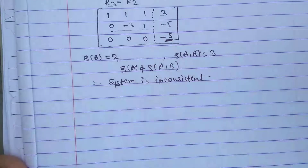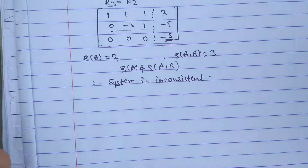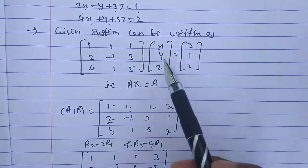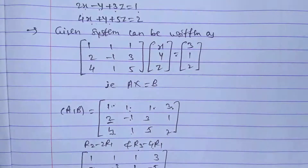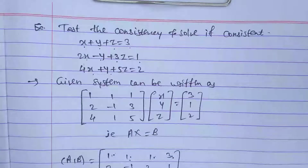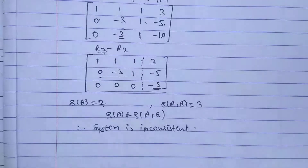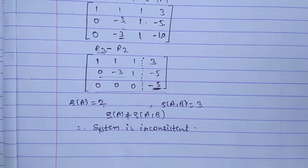Therefore the system is inconsistent, meaning the system has no solution. Since the system is inconsistent, there is no need to find a solution. This is the final answer: system is inconsistent, no solution.